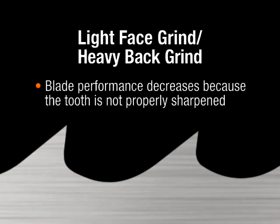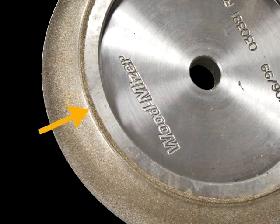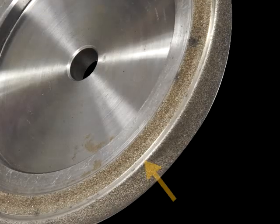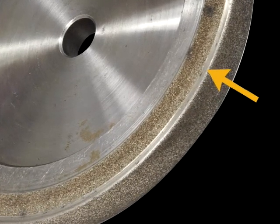When this occurs, your blade performance will decrease because the tooth is not properly sharpened. Remember, it is important to fine-tune the grinding adjustments, because improper sharpening will result in premature grinder wheel wear as well as a decrease in blade performance.